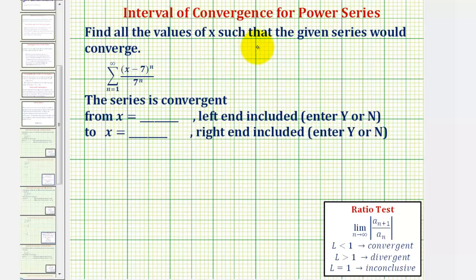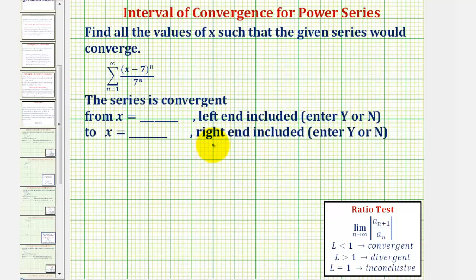We're going to find all the values of x such that the given series would converge, which is called the interval of convergence. Looking at our infinite series, notice how this series is centered at x equals seven, because we have the quantity x minus seven here. We'll first apply the ratio test, where we know this limit must be less than one for the series to converge. This will give us an open interval of convergence, and then we'll test the endpoints.